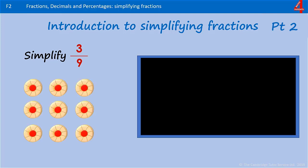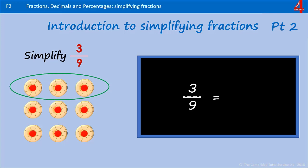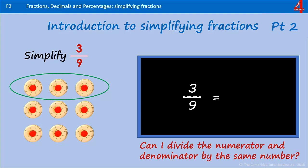Here we have 9 of those jam ring biscuits, and I've circled 3 of them. 3 ninths simplified. Can I divide the numerator and denominator by the same number? Because we know our 3 times table, we can recognise that 9 and 3 can both be divided by 3.